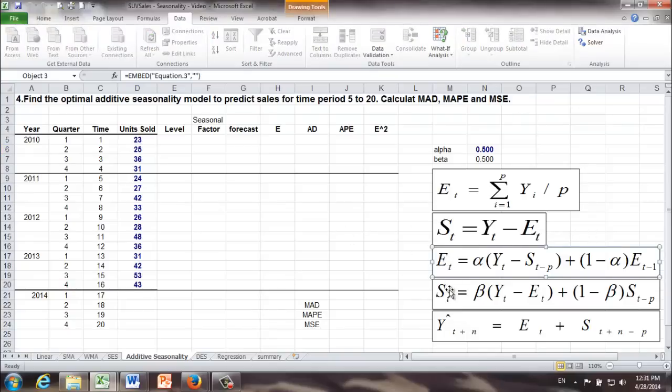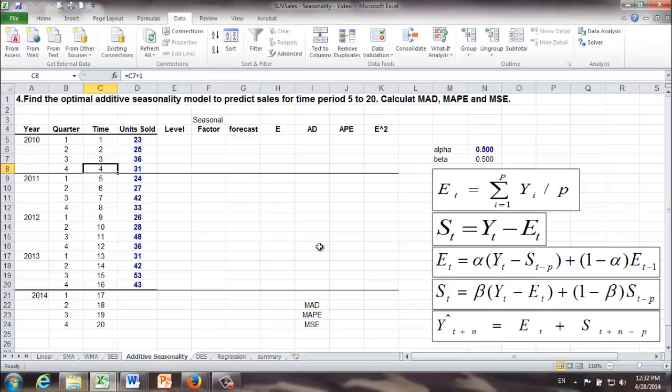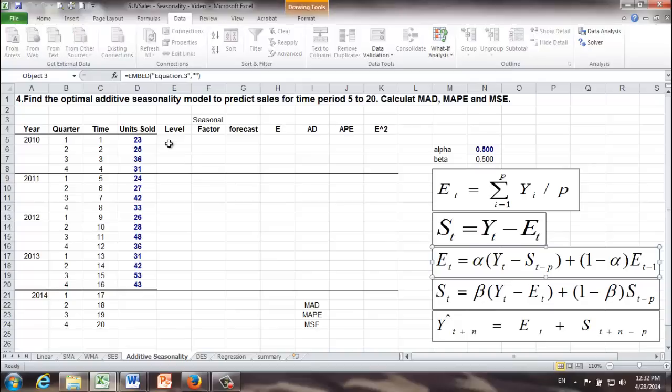If you look at the formula for calculating the level E and the seasonal factor S, we see things like subscript T minus P. For example, if we want to calculate base level of time period 1, T minus P will be what? 1 minus 4, which is negative 3, it cannot be done, right? And that's why we have the first two formulas for initialization.